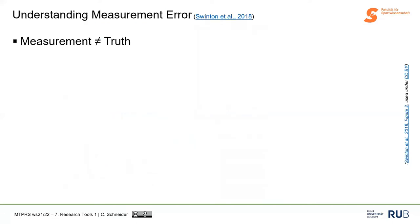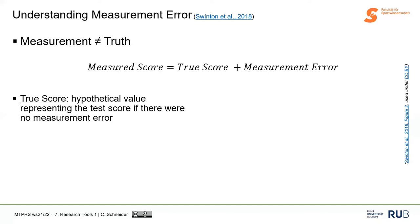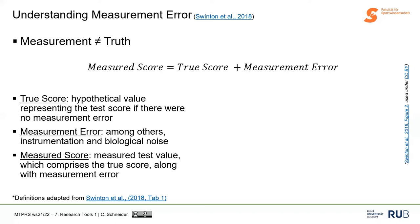To understand what measurement error actually is: when we take a measure in practice, the measurement does not represent the truth. The measured score equals the true score plus measurement error. We can never observe the truth — what the athlete actually is. The true score is a hypothetical value we'd collect if there were no measurement error. Measurement error could be instrumentation noise, biological noise, or other sources of variation. Every measurement comprises the true score plus measurement error.